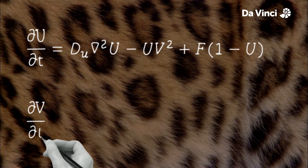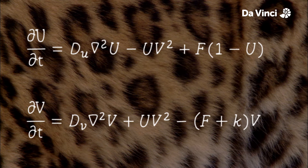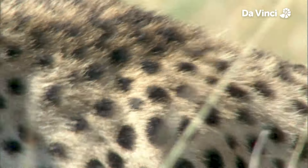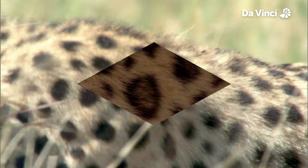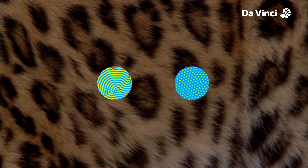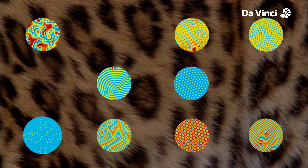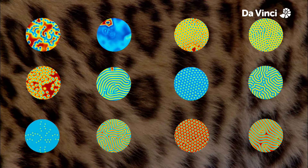Turing hypothesised that this process is governed by a set of partial differential equations. Turing's ideas have been developed to simulate the various markings in nature. Changing the parameters of the equations will change the patterns you get. These equations don't just produce spots and stripes — they can produce labyrinthine patterns, donut shapes, patterns you find on shells, the patterns of the animal kingdom.